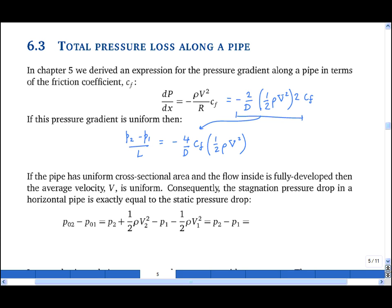And if the pipe has uniform cross-sectional area, then a half rho v2 squared is the same as a half rho v1 squared, and the stagnation pressure drop is the same as the static pressure drop, which we just calculated. This is minus 4L upon d times Cf times a half rho v squared. And if the pipe is horizontal, then this is the same as the total pressure drop.